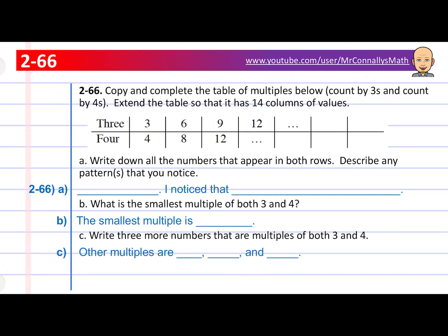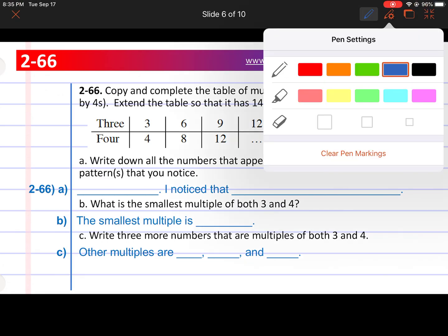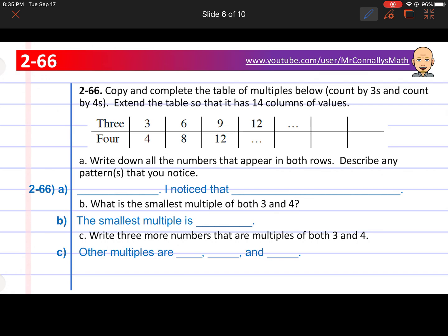Question 66. Copy and complete the table of multiples below, count by threes and count by fours. Extend the table so that it has 14 columns of values. So we've got 1, 2, 3, 4, 5, 6, 7, 8, 9, 10. You're going to keep going all the way up to 14 columns. On the top, it says we're counting by threes. So that means we're plus 3, plus 3, and plus 3. 9 plus 3 is 12, and the next number is 15.